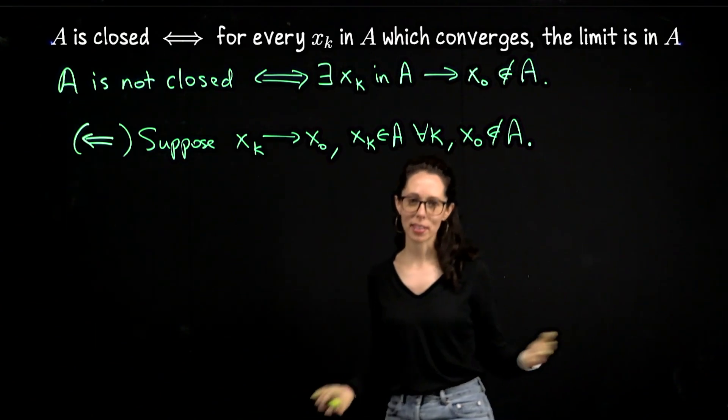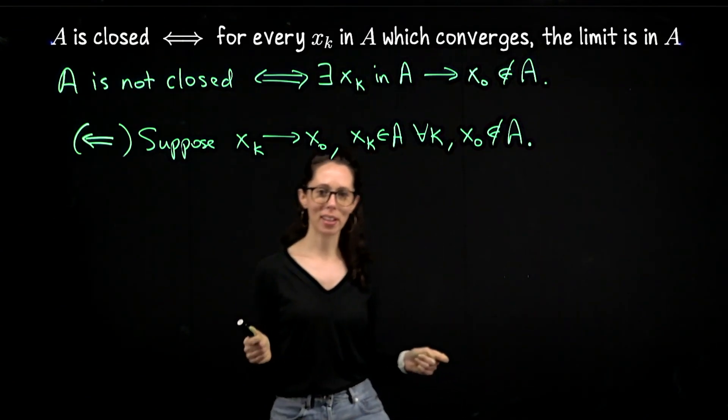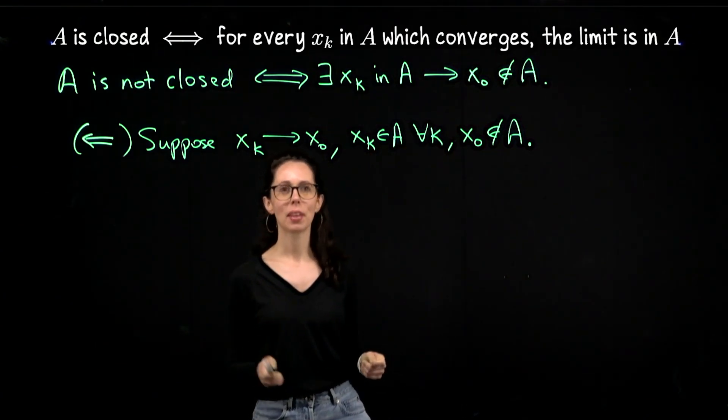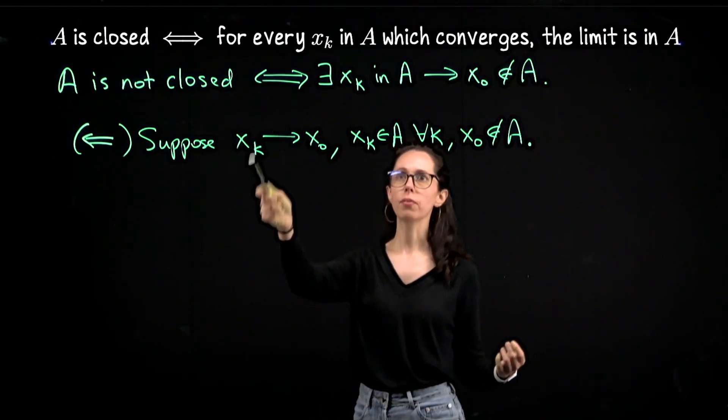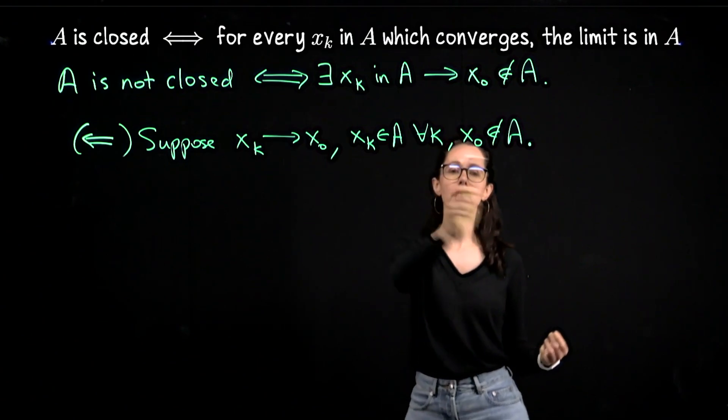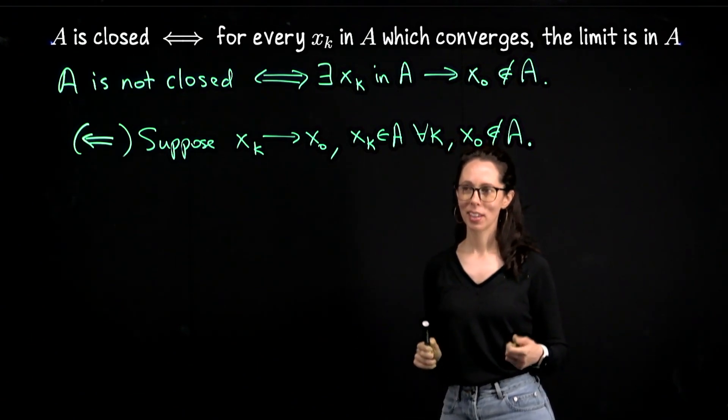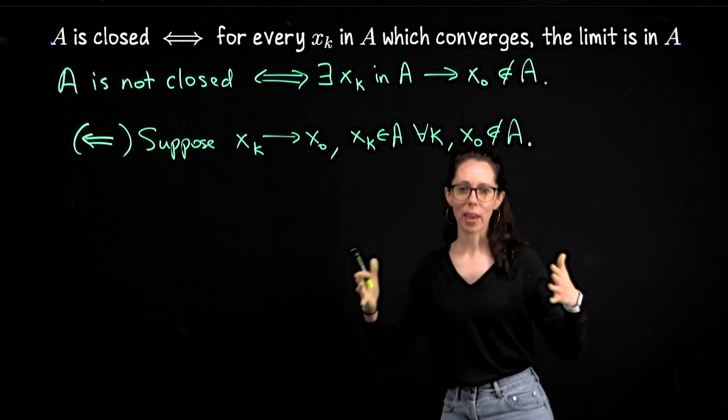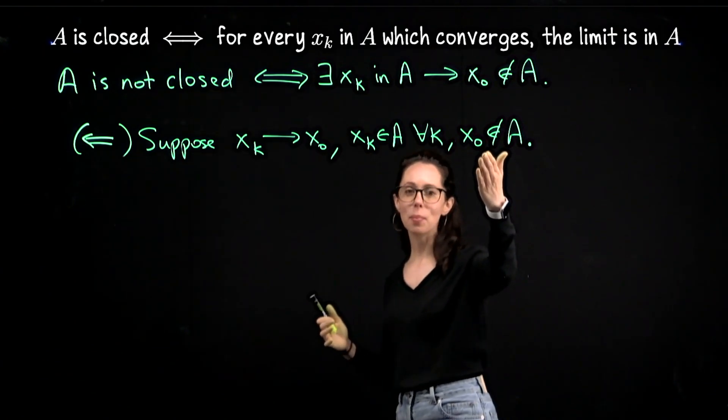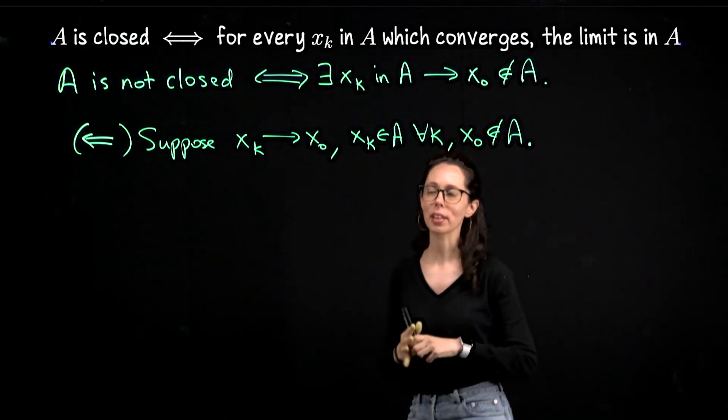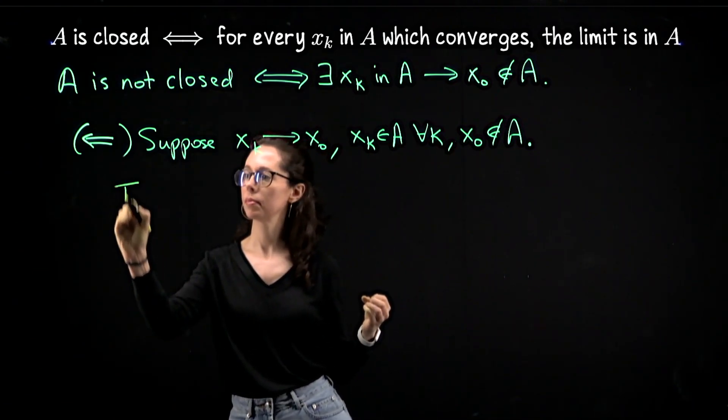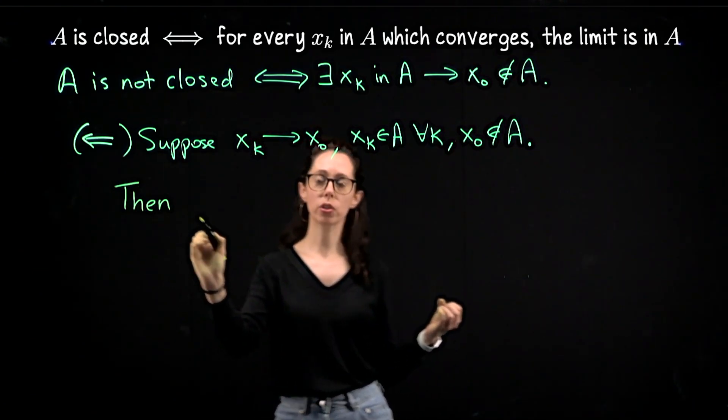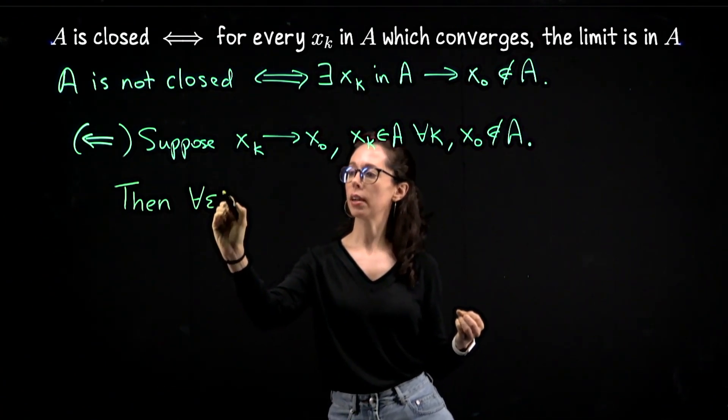The backwards direction has all of the same ideas, but the proof is going to be faster because the sequence is already created for us. So for this backwards direction, what we're going to suppose is that there exists a convergent sequence in A, but the limit is not in A. Then that means that points from A are getting really close to this limit. This limit has got to be an accumulation point. Let's just write that out for the reader.